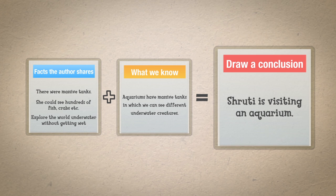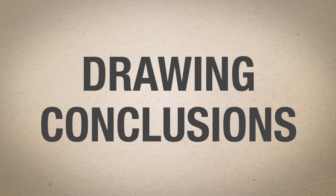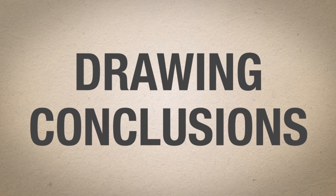When you read, you look for clues to help you decide what is happening in the story. Sometimes, the author doesn't tell you everything that is happening. You have to think about the facts given, plus what you know, to draw a conclusion. Drawing conclusions helps us deepen our understanding of what is happening in the story. Let's look at another example.